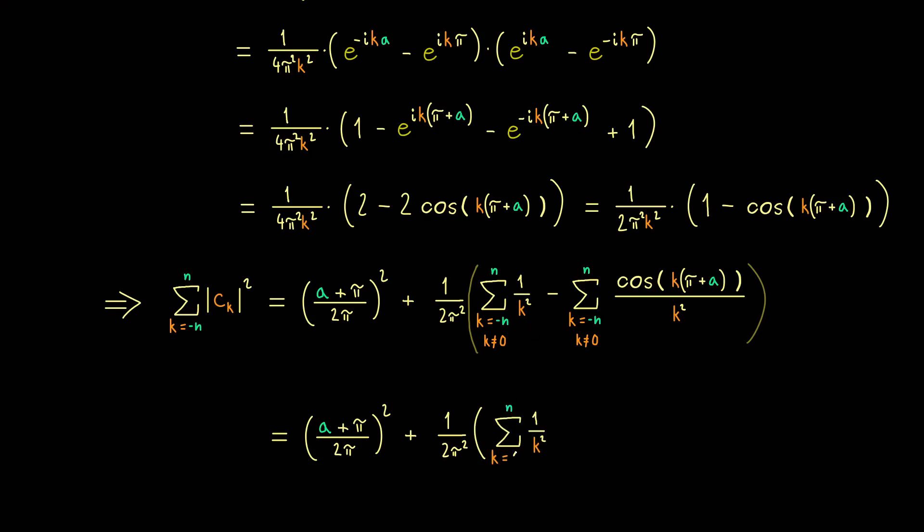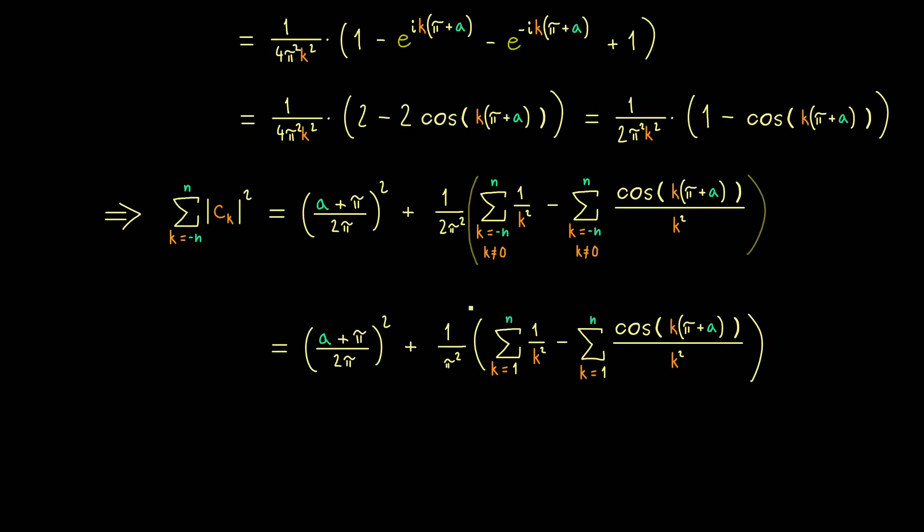Therefore, the only thing we need to know now is the limit, the value of these series. However, first let's rewrite it from 1 to n and then we cancel this 2 here. So indeed, this makes the whole thing easier to read. And now in the next step, we go to the limit n to infinity. Which means, we need to know these two values to finish our proof.